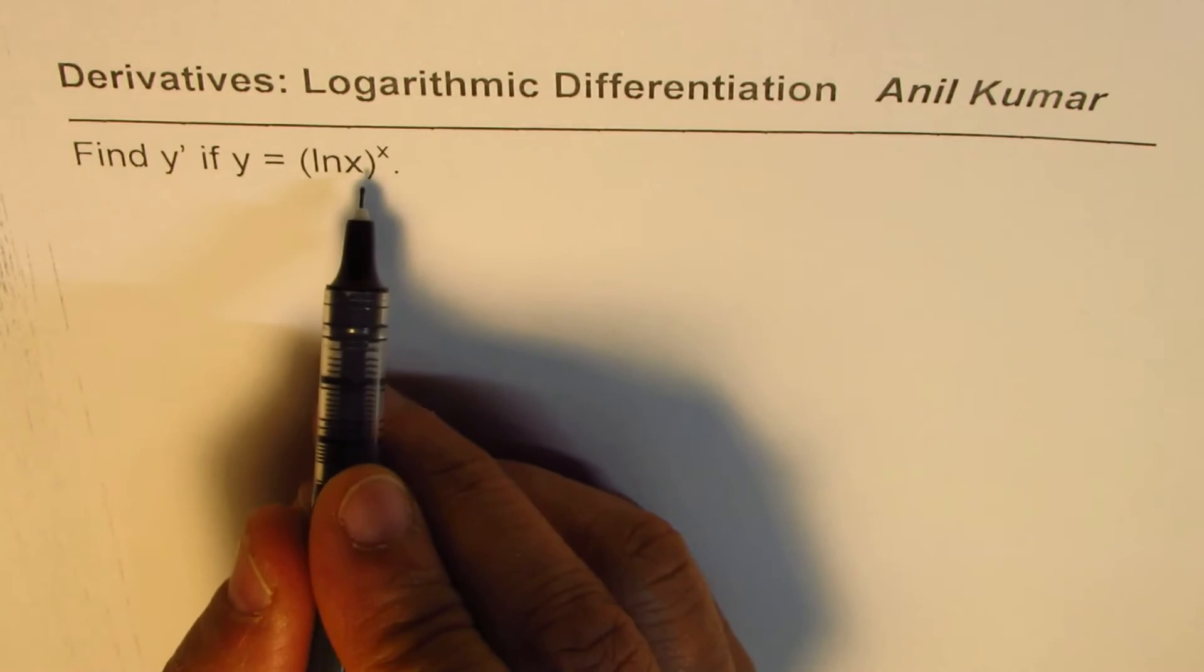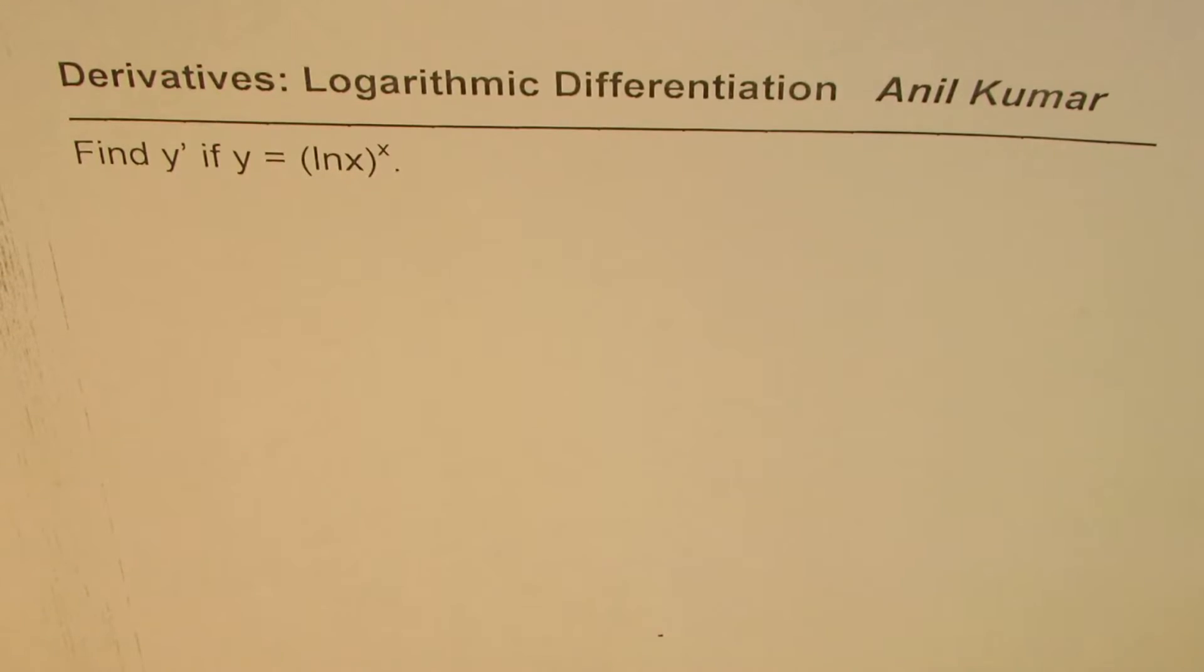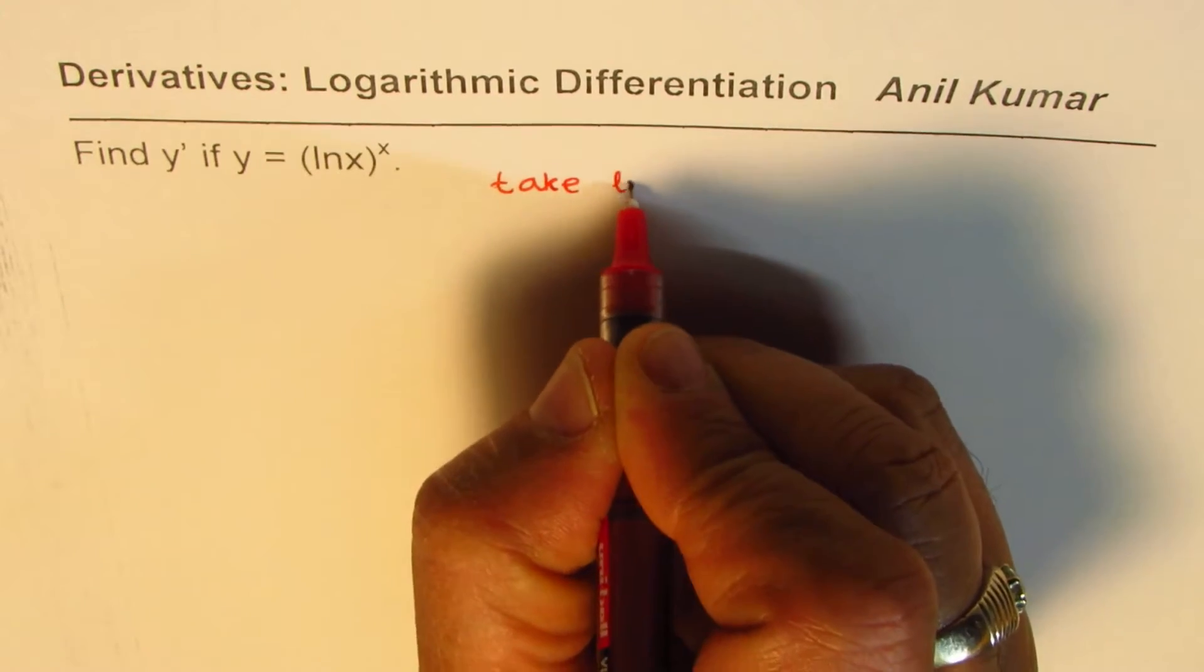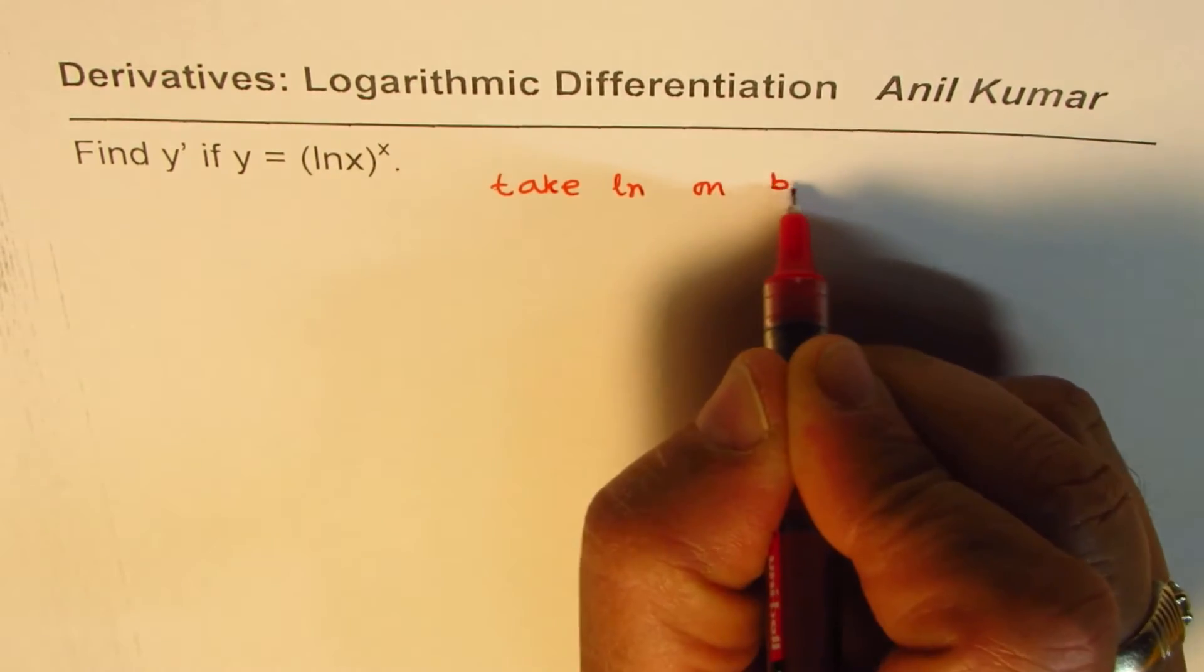Now to solve such question we need to take logarithms on both sides. So we'll take natural log, that is ln, on both sides.